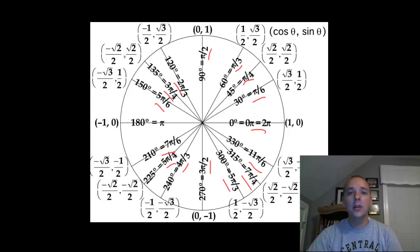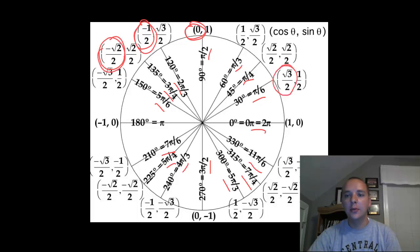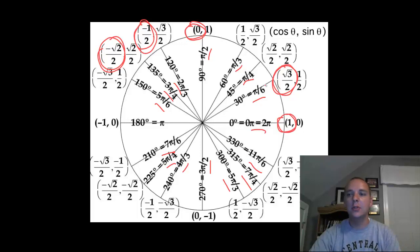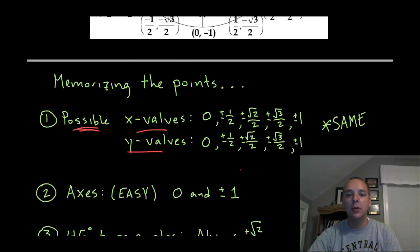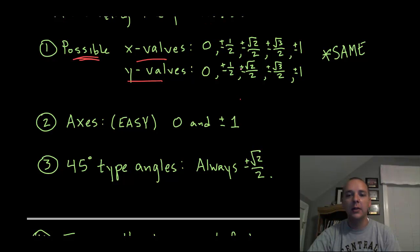If you scroll back up you see they are all the same — a finite list of numbers. You have 0, a half, root 2 over 2, root 3 over 2, and 1, and that's about it. Some have different signs — plus or minus — but that's basically it. It's really just these 5 numbers, and because of symmetry both the x's and the y's achieve those numbers.